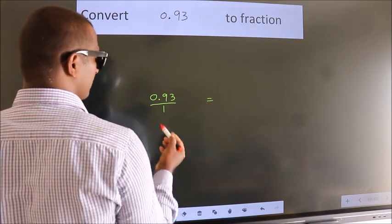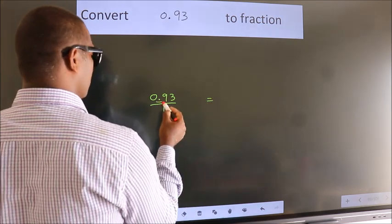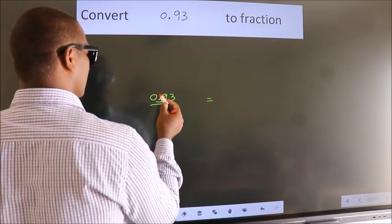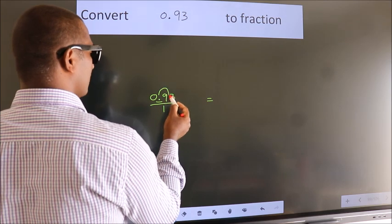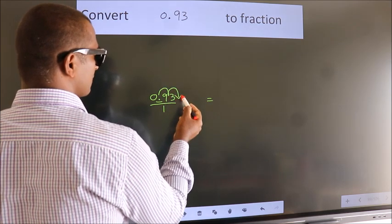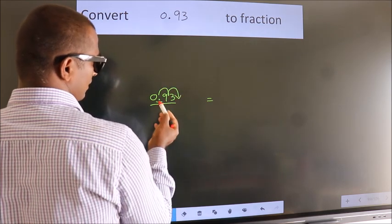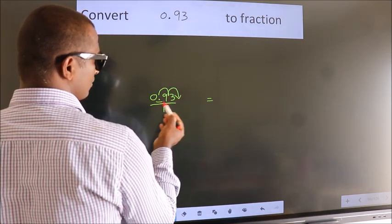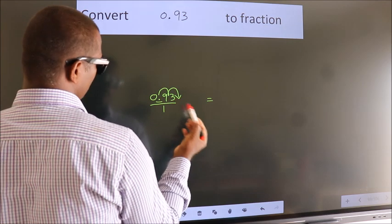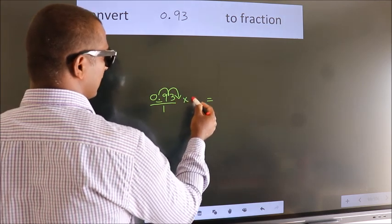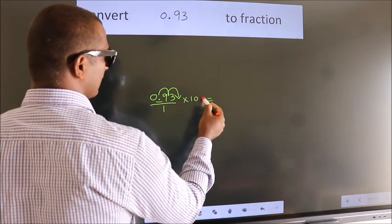we have to move this decimal after 2 numbers. To move this decimal after 2 numbers, we should multiply it with 100.